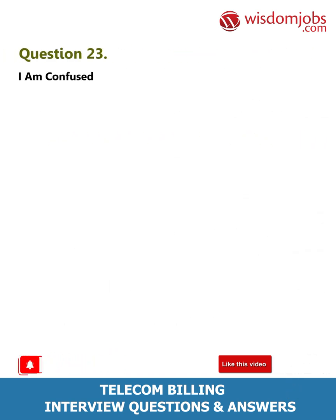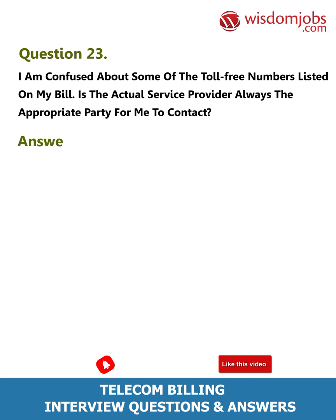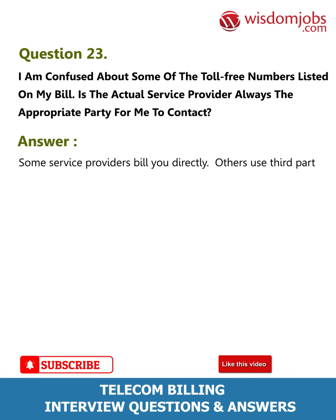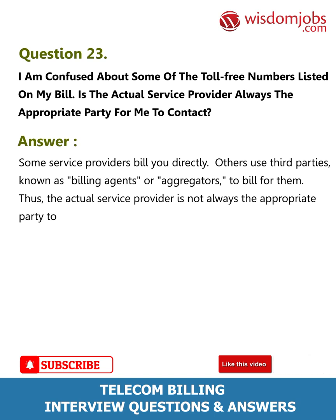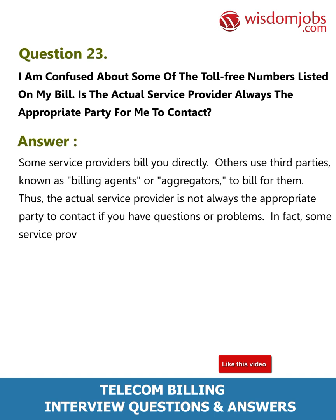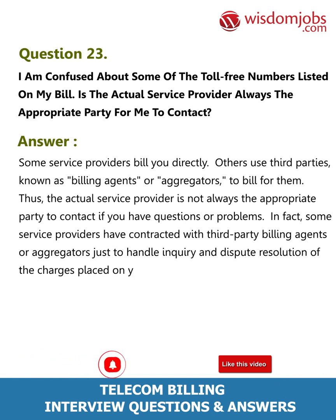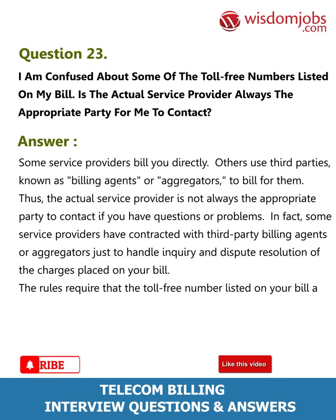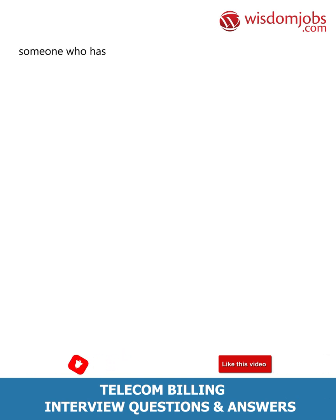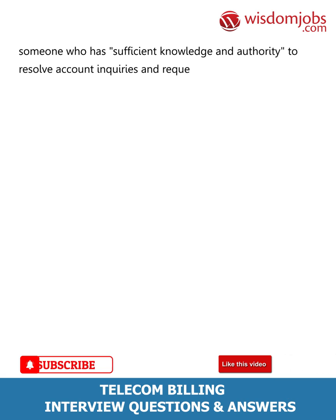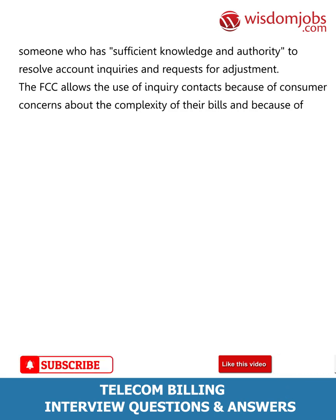Question 23: I am confused about some of the toll-free numbers listed on my bill. Is the actual service provider always the appropriate party for me to contact? Answer: Some service providers bill you directly; others use third parties known as billing agents or aggregators to bill for them. Thus, the actual service provider is not always the appropriate party to contact. In fact, some service providers have contracted with third-party billing agents or aggregators just to handle inquiry and dispute resolution. The rules require that the toll-free number listed on your bill must connect you to someone who has sufficient knowledge and authority to resolve account inquiries and requests for adjustment. The FCC allows the use of inquiry contacts because of consumer concerns about the complexity of their bills and because of increased fraud and abuse.